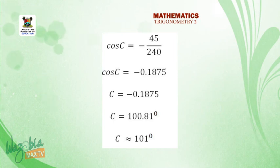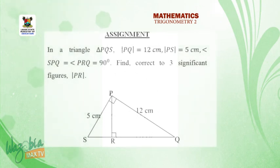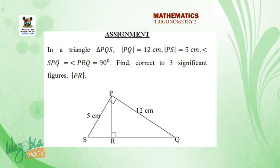We have C equals to 100.81 degree. So approximately it is 101 degree. So I have some assignments here for you. In a triangle PQS, PQ is 12 cm, PS is 5 cm, and angle PSQ is equal to angle PRQ, which is 90 degree. Find correct to three significant figures PR. Thank you very much.